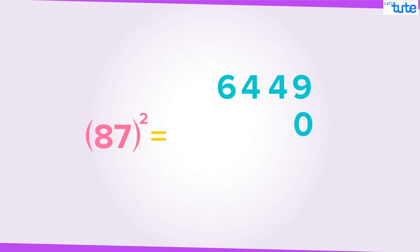Now 8 into 7 is 56. Multiply 56 by 2 which will give us 112. Now, write here 112. Now, by adding these two numbers, we will get 7569.